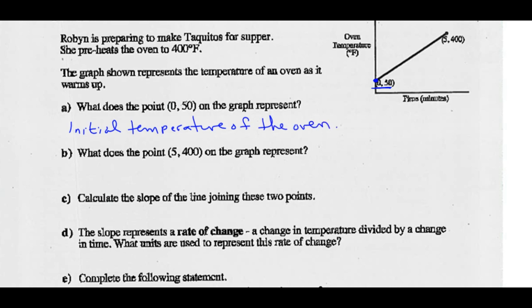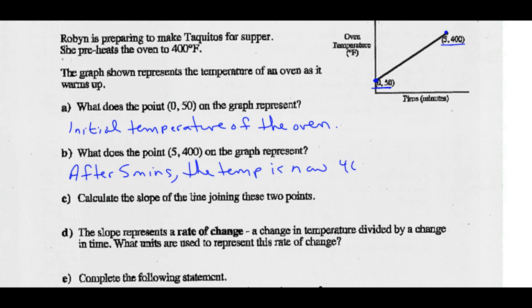What does the point (5, 400) on the graph represent? That's this point right here — time of 5 minutes, a temperature of 400 degrees Fahrenheit. After 5 minutes of heating that oven up, the temperature has increased to 400 degrees Fahrenheit.